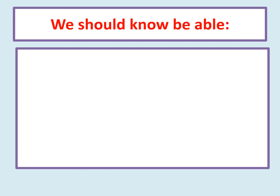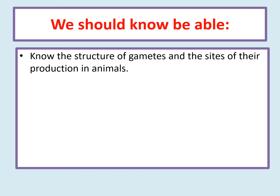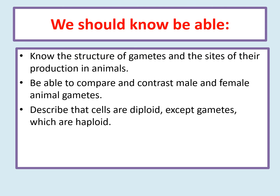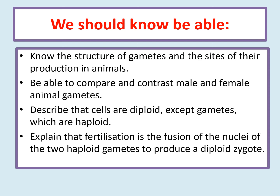We have now come to the end of the lesson. You should be able to know the structure of gametes and the site of their production in animals: sperm has a tail and a haploid number of chromosomes, produced in the testes; the egg has a large food store and large cytoplasm with a haploid number of chromosomes, produced in the ovary. You need to compare and contrast the female and male animal gametes, describe that cells are diploid except gametes which are haploid, and explain that fertilization is the fusion of the nuclei of two haploid gametes to produce a diploid zygote which divides into an embryo. Well done if you can confidently answer all of the success criteria.